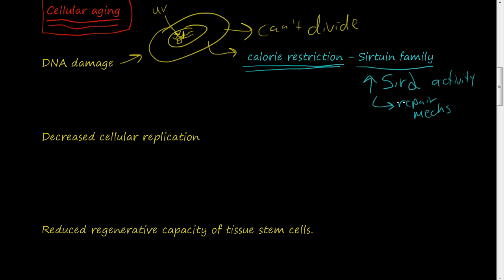As we do calorie restriction, we have an increase in SIR2 activity, which in turn increases the DNA repair mechanisms. These repair mechanisms help fix the DNA so that our cells can last longer. That covers DNA damage.